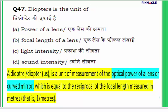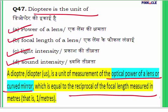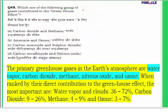Question 47: Diopter is the unit of — power of a lens, focal length of a lens, light intensity, or sound intensity? A diopter is a unit to measure the optical power of a lens or curved mirror. It is equal to the reciprocal of the focal length. Since it measures the optical power of a lens or curved mirror, the answer for question 47 is A — power of a lens.